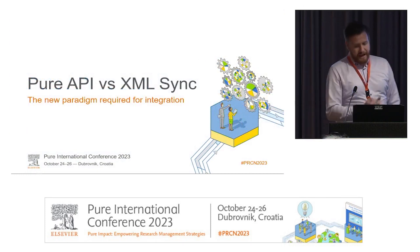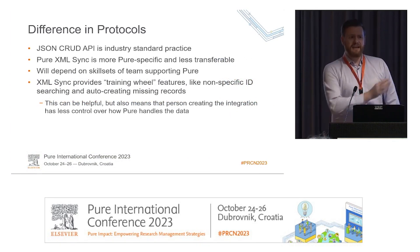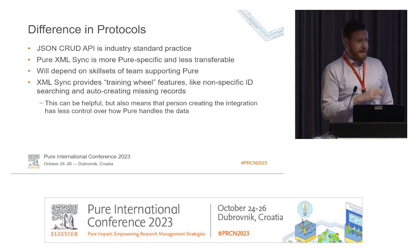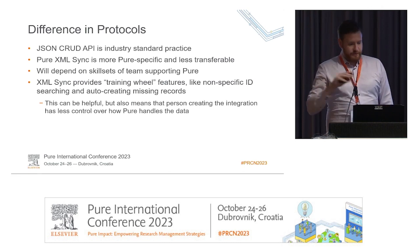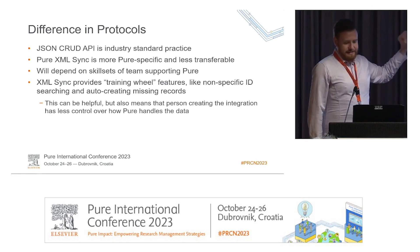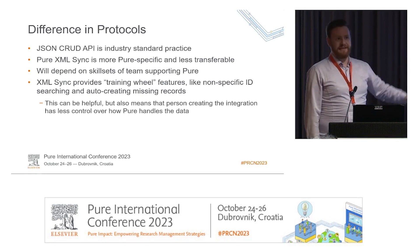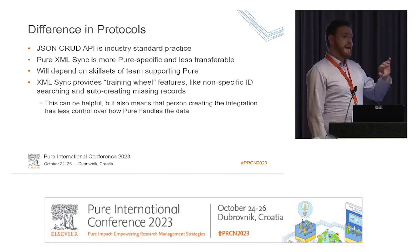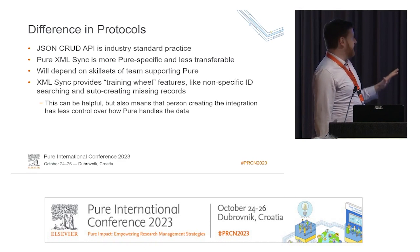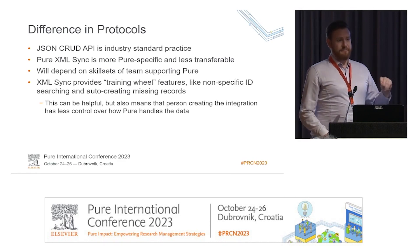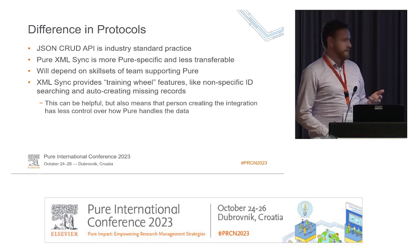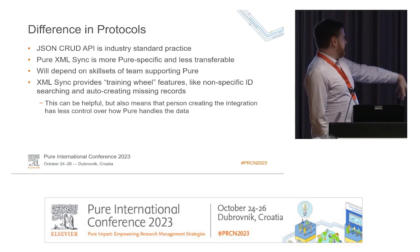Talking about API versus XML sync — there are a number of key differences, and there is actually a wiki page I've written about this in the client space, which will soon be moving over to Helpjuice, that I'd recommend as a resource to share with your teams internally. First off, JSON CRUD API is industry standard practice — most people who have done any web development and integrations will know how to deal with it. XML is a bit dated now, and Pure XML is very specific to Pure, so it's a skill people need to learn. The JSON API — people should be able to pick up the Swagger page and know what they're doing with it a lot more naturally.